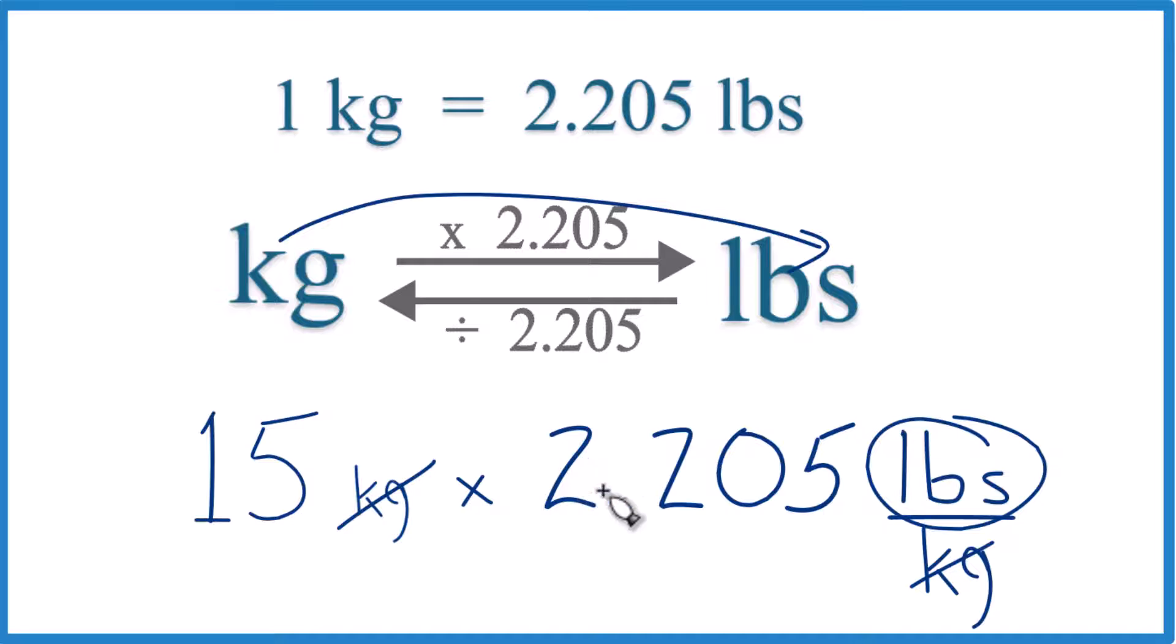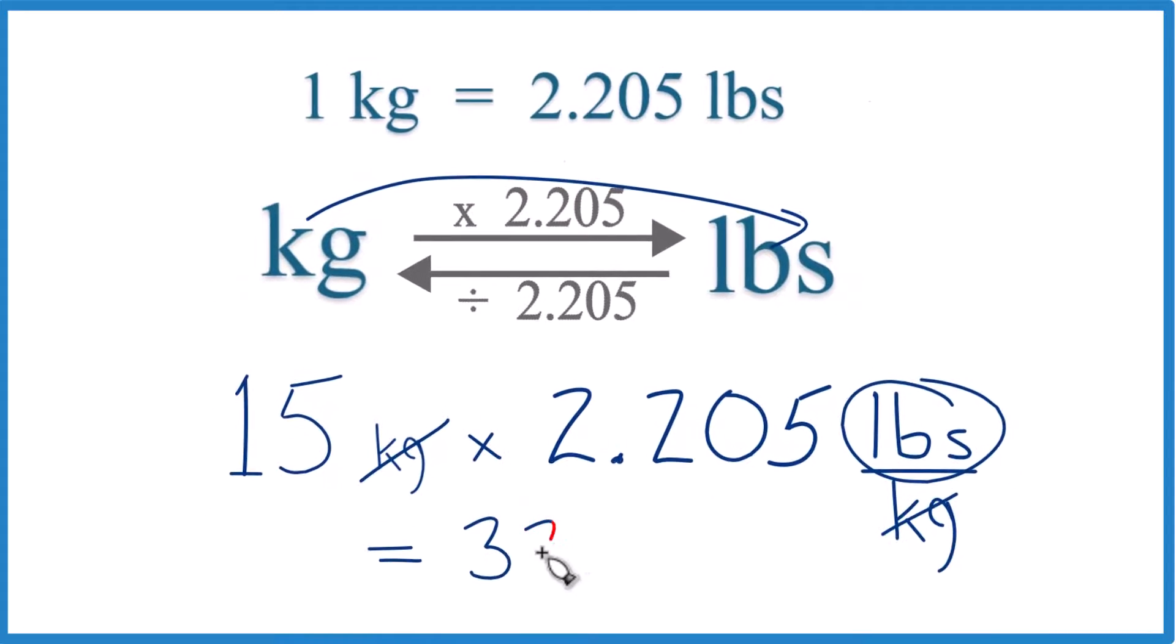So 15 times 2.205, that equals 33.075. I'm going to call it 33.08. And the units, that's the pounds.